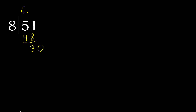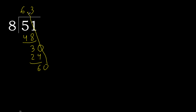Ok, 30. 8 multiply by 4 is greater. 8 multiply by 3: 24, is not greater. Subtract — remainder is 6. Complete.